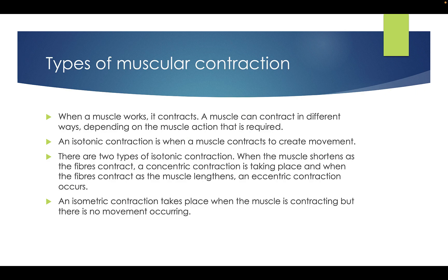Types of muscle contraction: when a muscle works, it contracts. A muscle can contract in different ways depending on the muscle action required. An isotonic contraction is when the muscle contracts to create movement. There are two types: a concentric contraction is when the muscle shortens as the fibers contract; an eccentric contraction is when the fibers contract as the muscle lengthens. An isometric contraction takes place when the muscle is contracting but there is no movement occurring.